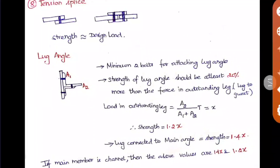So what does tension splice mean? It is a joint for a tension member — we provide this type of joint when the length of the member required is not available in the Indian standards. When the length is beyond that limit, we will be joining by welding, bolting, or riveting.